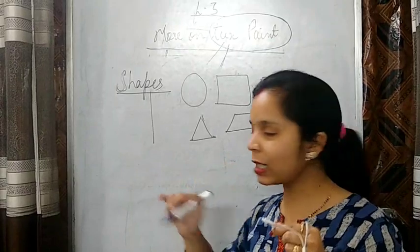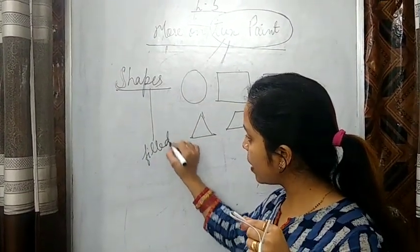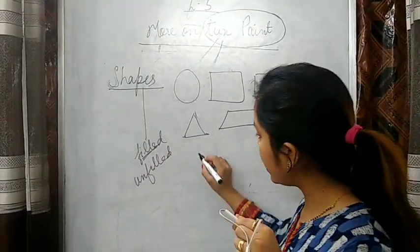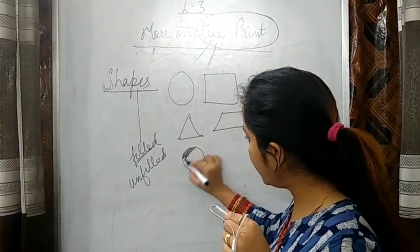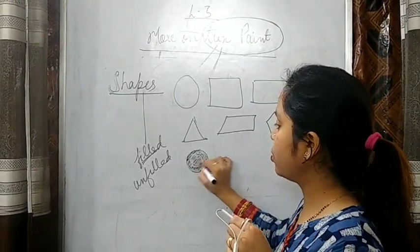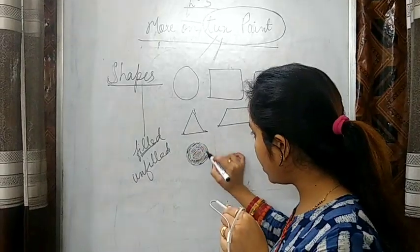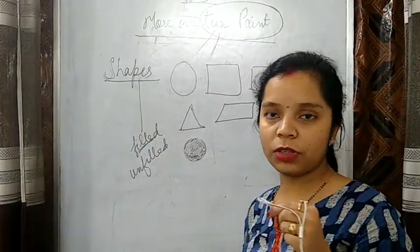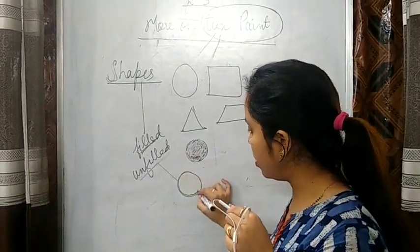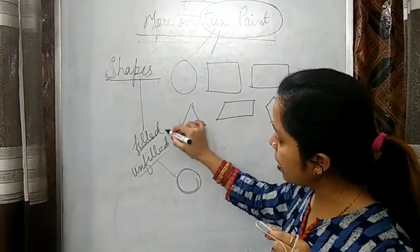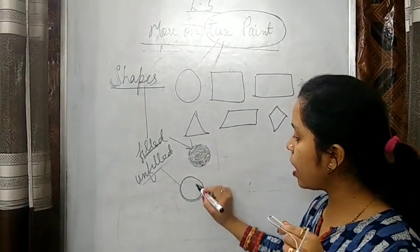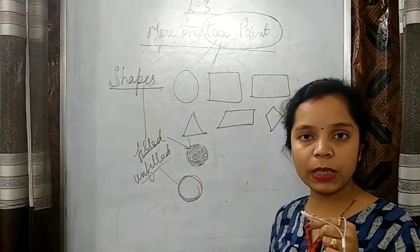There are two kinds of shapes in Tux Paint. One is filled shape and one is unfilled shape. When you draw a filled shape, it will be solid color — a colored shape will be drawn. Like a circle will be drawn and it will be filled with color. And one is unfilled shape — only the outline of the shape will be drawn. That is the difference between filled shape and unfilled shape.